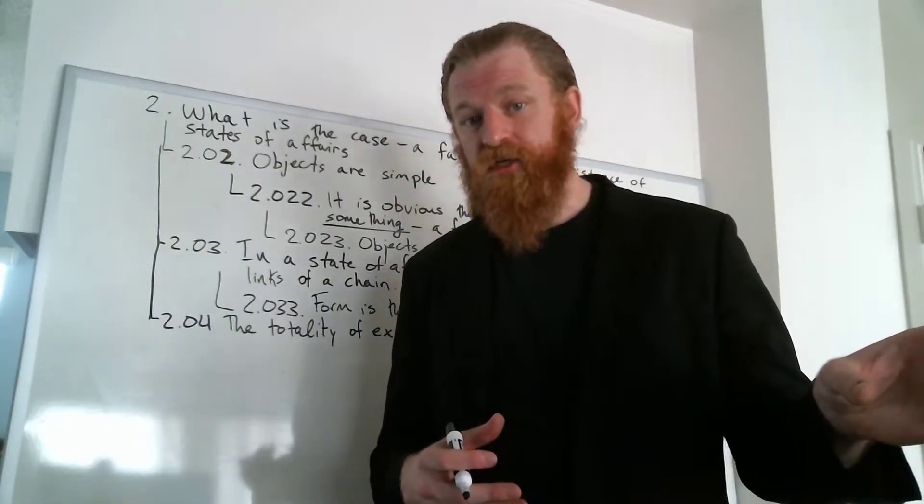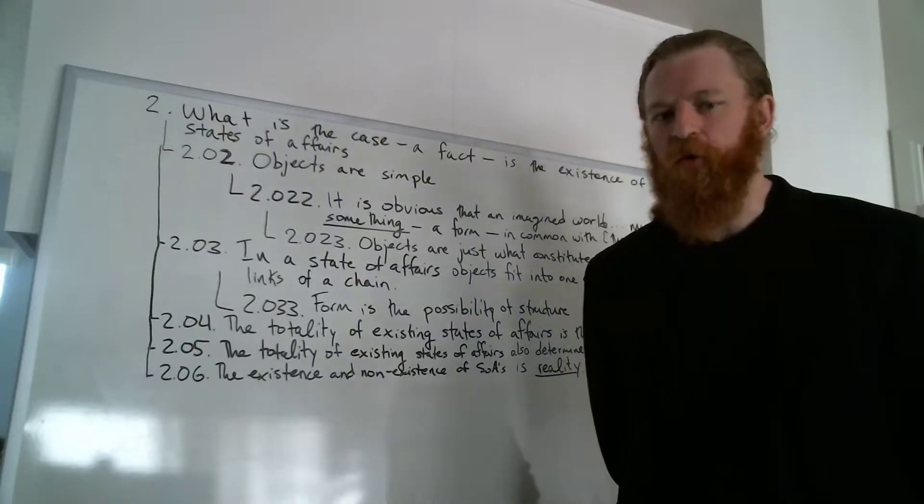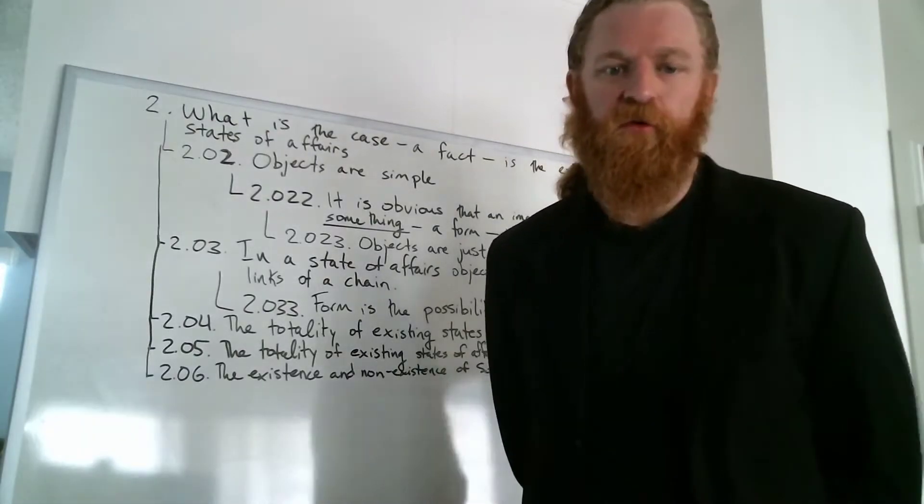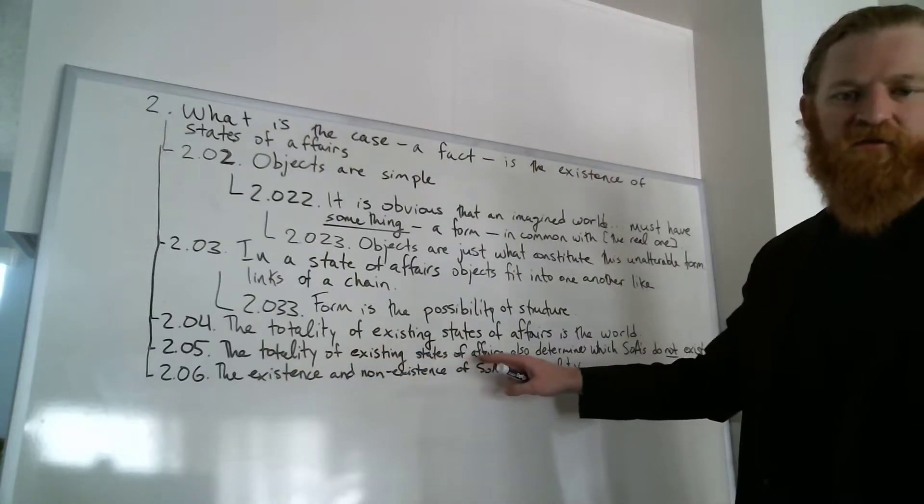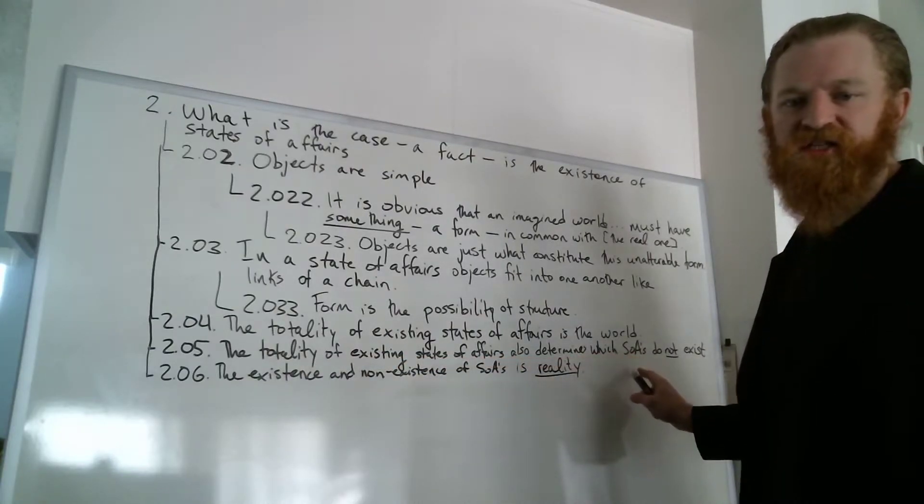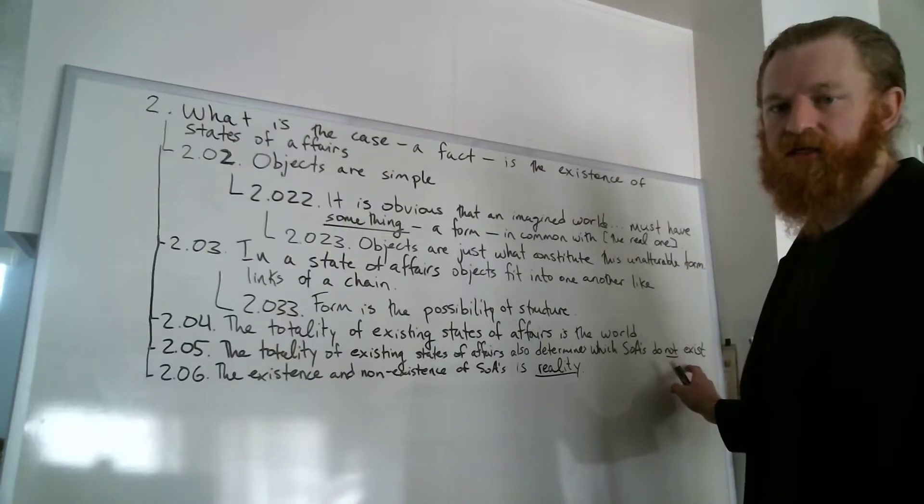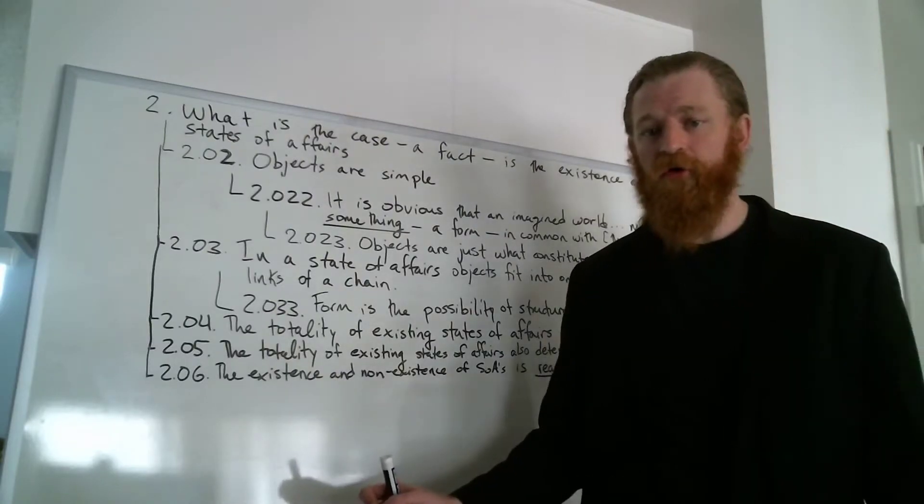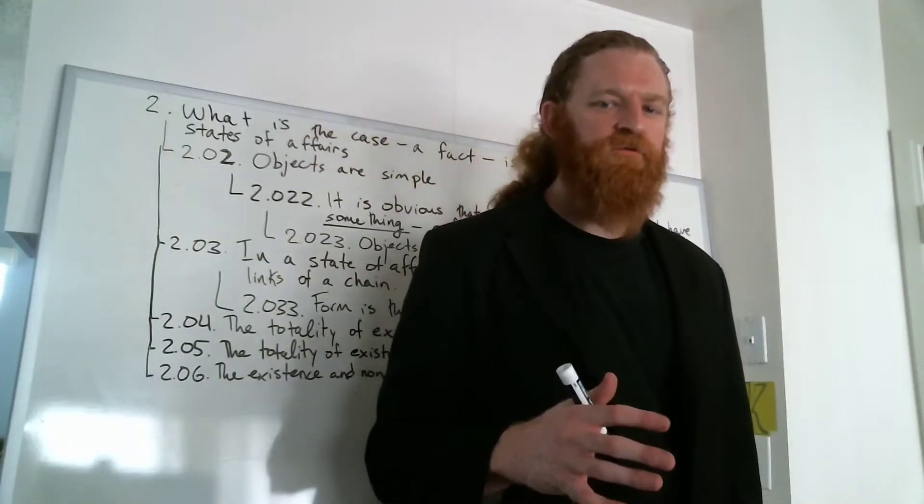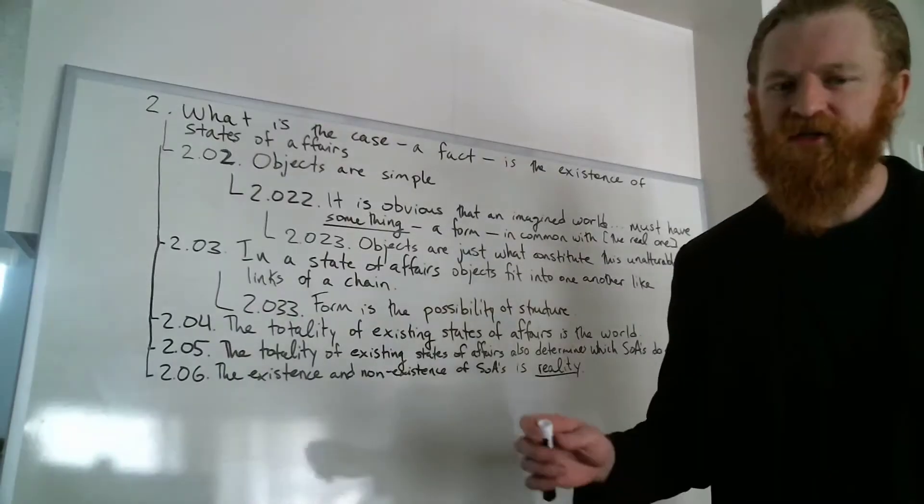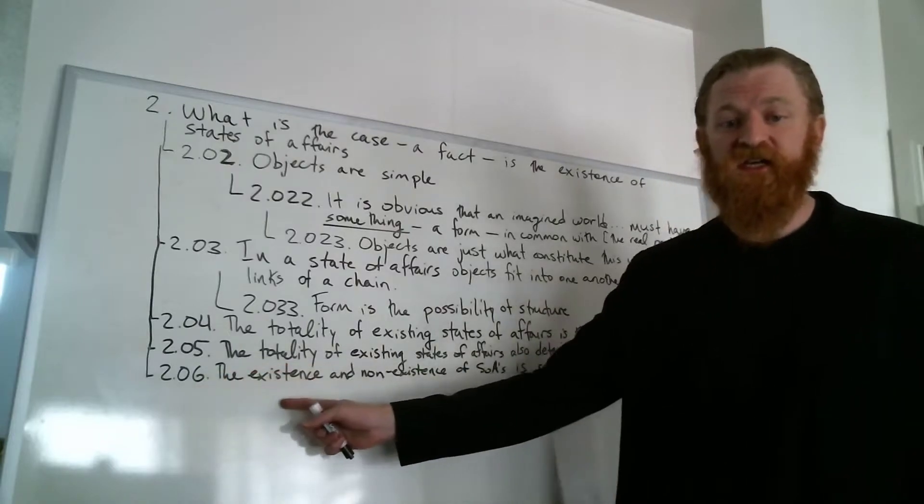When we combine 2.04 with 2.05 and 2.06, the totality of existing states of affairs also determines which states of affairs do not exist. This is super crucial for overcoming some of the really implausible aspects of Russell's ontology.